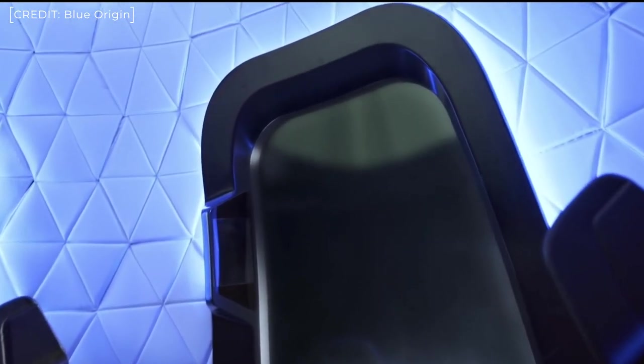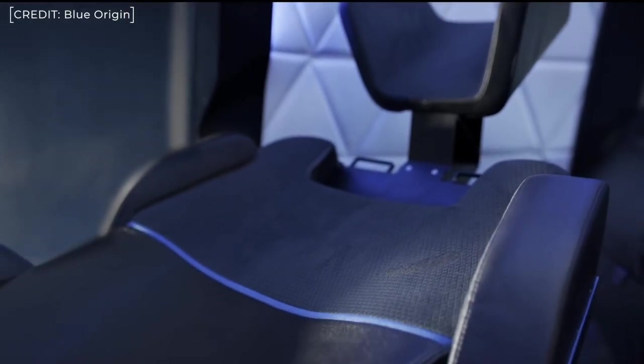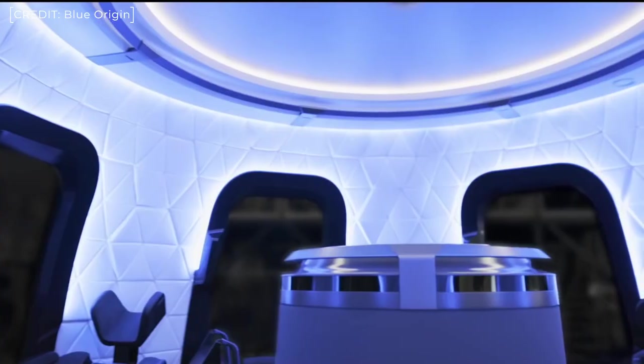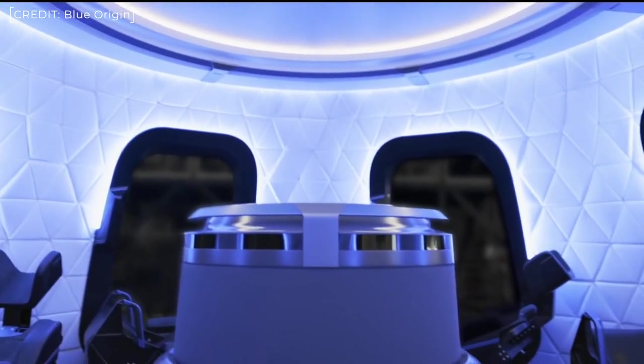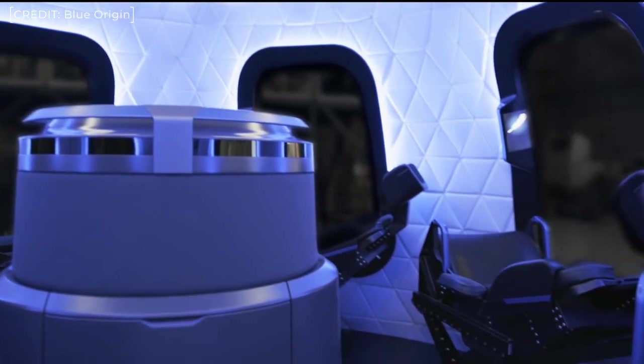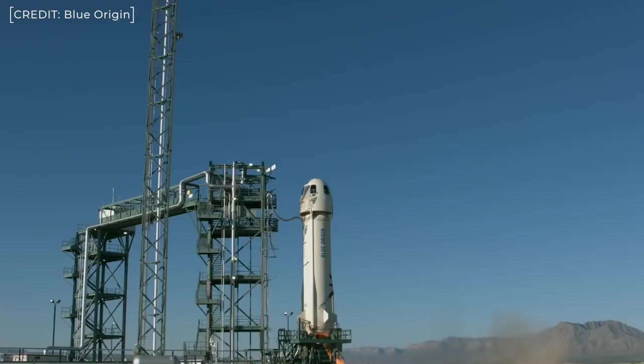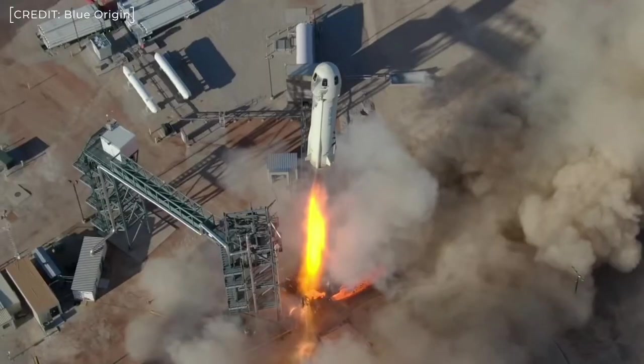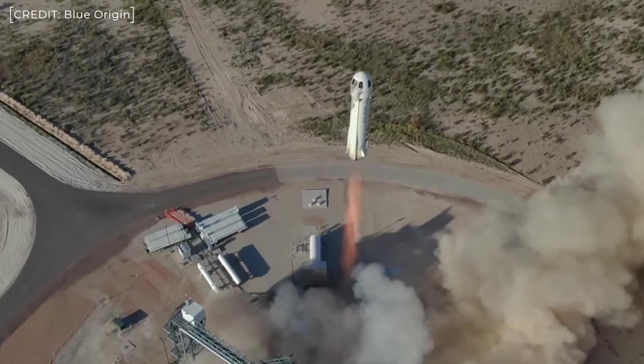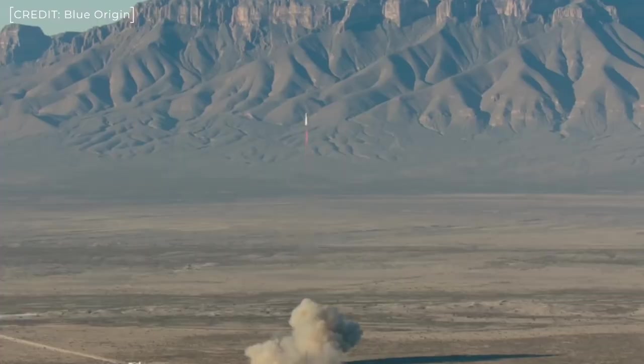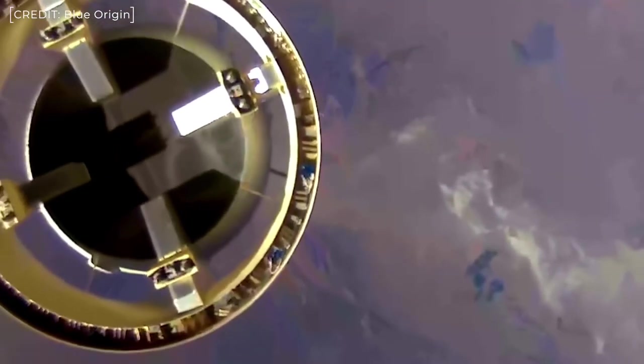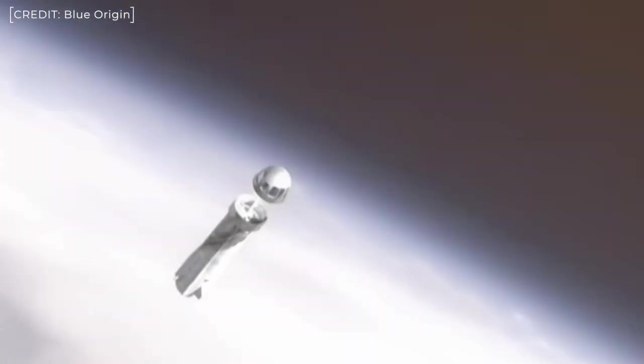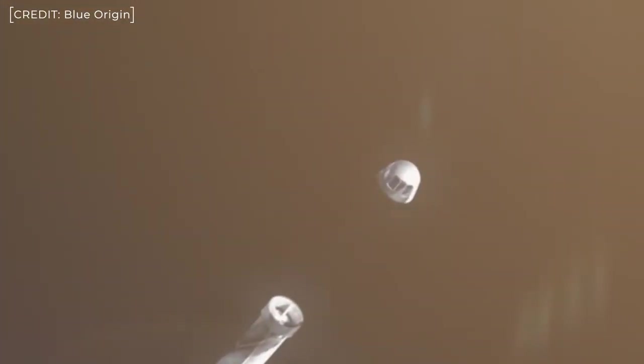The next entrant into this category is Blue Origin with their New Shepard rocket. This is much more of a traditional way to get into space. You're strapped into a capsule on top of a rocket booster, and again this is a suborbital flight, so it reaches about 107 kilometers above the Earth, again just above the Karman line. And again, like Virgin Galactic, the passengers will be able to experience this period of weightlessness and enjoy the views of space and the Earth from these absolutely enormous windows they have all around the capsule.